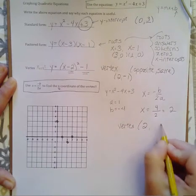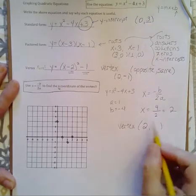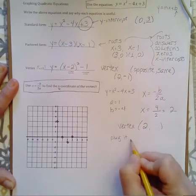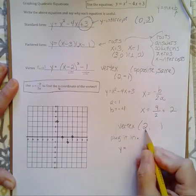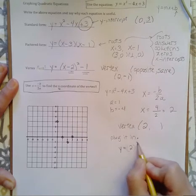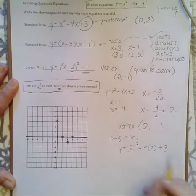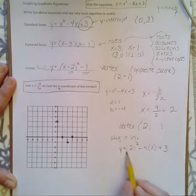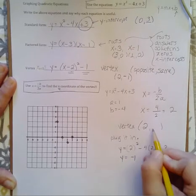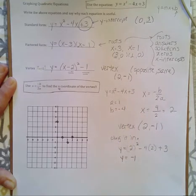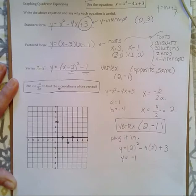The vertex is 2 comma something. Well, how are we going to find the y-coordinate of our vertex? We're going to plug it in. So we have our equation here, and y is equal to 2 squared minus 4 times 2 plus 3. That's 4 minus 8, that's negative 4 plus 3. Negative 4 plus 3 is negative 1. So that's how you can find your vertex if you do not have vertex form given to you.